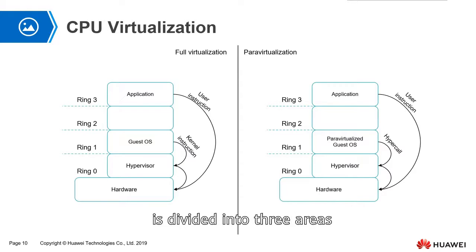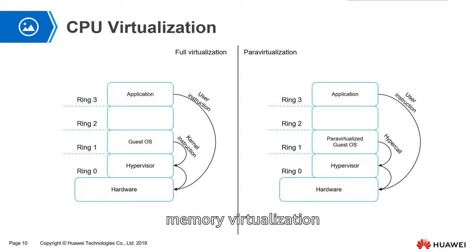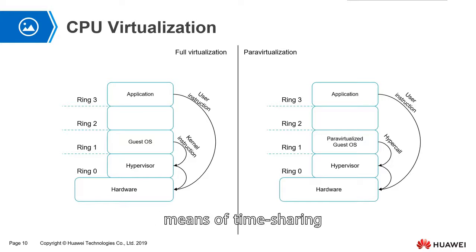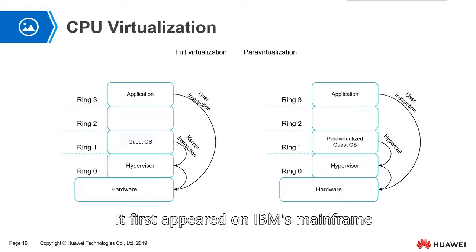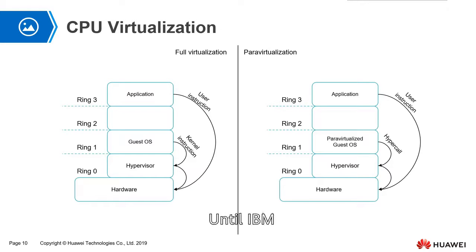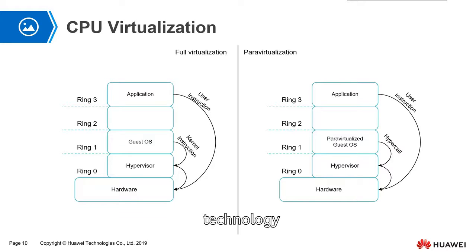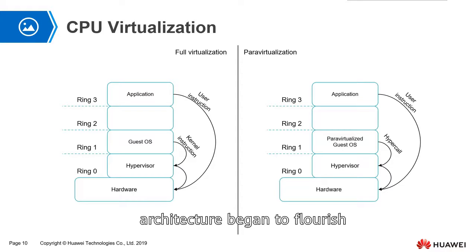Computational virtualization is divided into three areas: CPU virtualization, memory virtualization, and IO virtualization. CPU virtualization is implemented by means of time-sharing. It first appeared on IBM's mainframe. Until IBM opened up its own CPU virtualization technology, the virtualization of x86 architecture began to flourish.